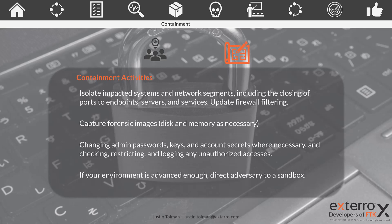You also want to start changing admin passwords, keys, and account secrets. If they're in your network, they found some gap — it could be hardware or software, or maybe they broke a password or social engineered some information that allowed them to get in. By changing this information, you remove that attack vector from the adversary. If you're in an advanced environment and have sandboxes implemented, try to divert them into that so you can study them in a safe environment. However, this is for advanced users only — the priority is to protect the data, protect the mission, preserve the integrity of your network, and expel the adversary.